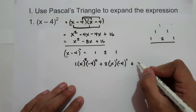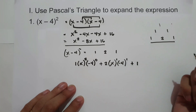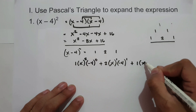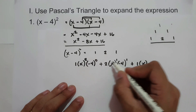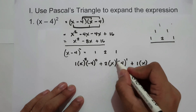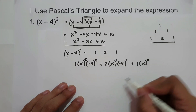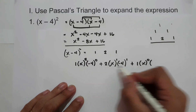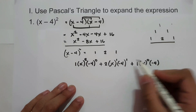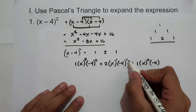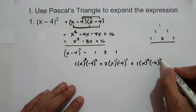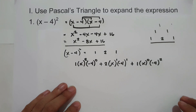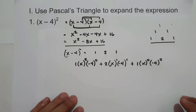Plus, the third coefficient is 1, times the first term x. The exponents of x go 2, 1, and then 0. And for negative 4, the exponents go 0, 1, and then 2 — the highest exponent. Now let us simplify our answer.